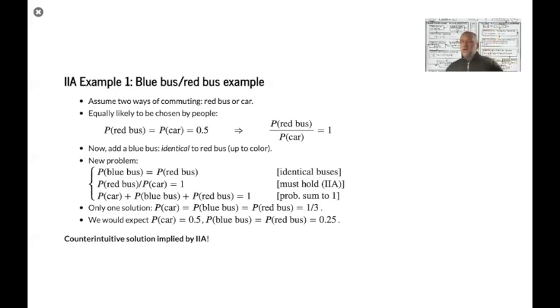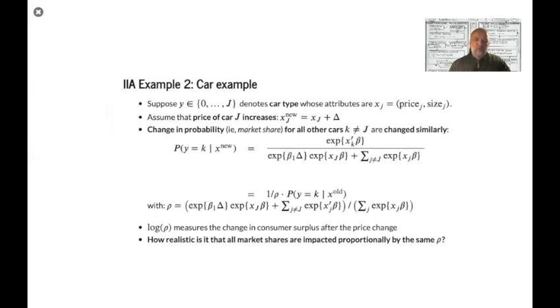And what is it coming from? It's coming from the fact that we're assuming that those epsilons, they are independent across alternatives. It's not like the bus epsilons are more correlated or closer to each other than the car epsilon, which would be intuitive. We would expect that it's almost like we would expect them to be the same. So that's a very intuitive, counterintuitive example.